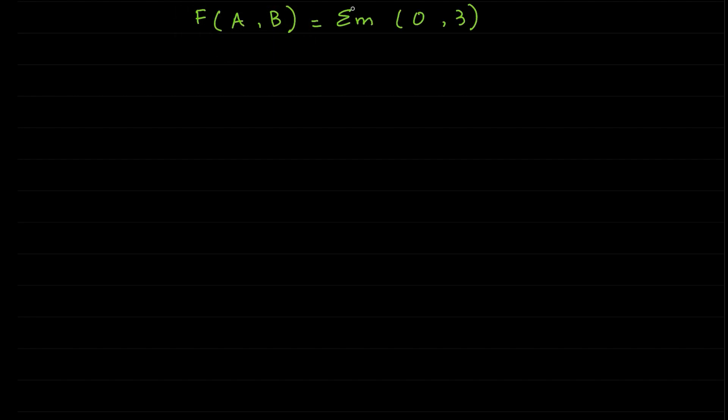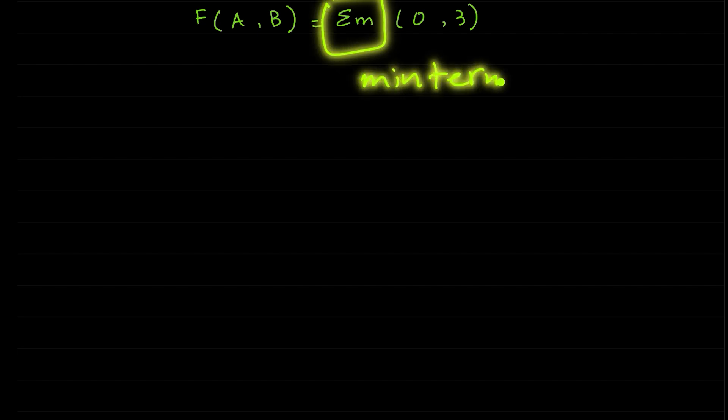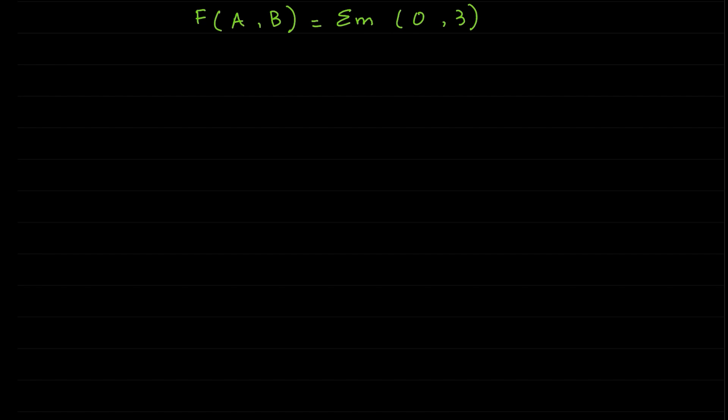This term means min term. Min term indicates whatever the number given in this should be indicated as one in the matrix of K-map. If it is a bit confusing to you right now then don't worry, it will all make sense in a bit. Min term indicates that whatever number present in the bracket, they will be considered as one in the matrix of K-map.